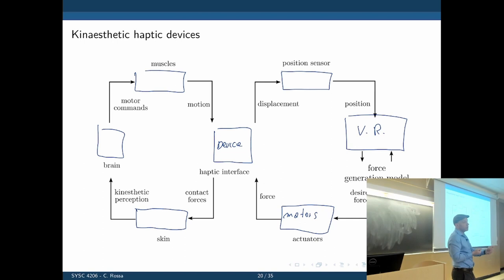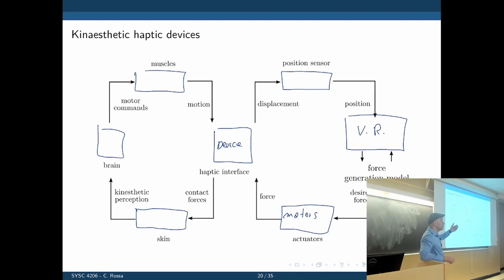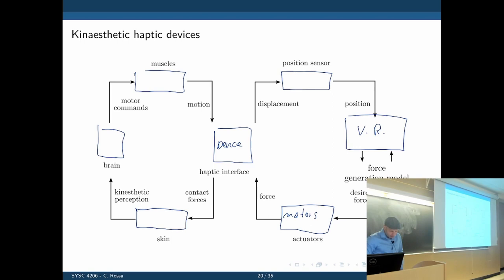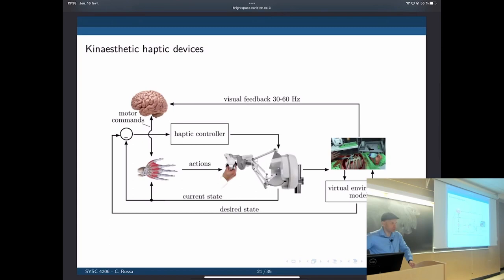On the other end, the input to the virtual environment is position, and the output is the force generated. In the surgical simulator example, the input to the simulation is the position of the hammer — now given by the position of the haptic device. Then there is a physics-based model that tells us how much force to display to the user if you hit something with that hammer.